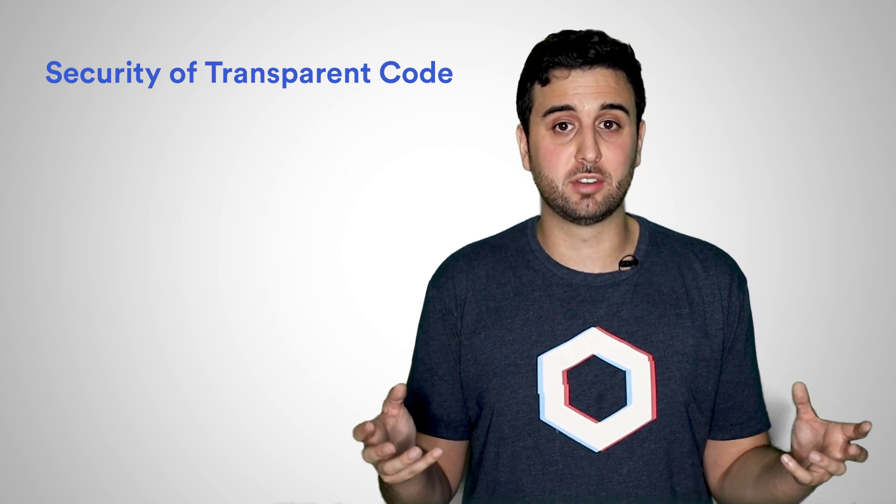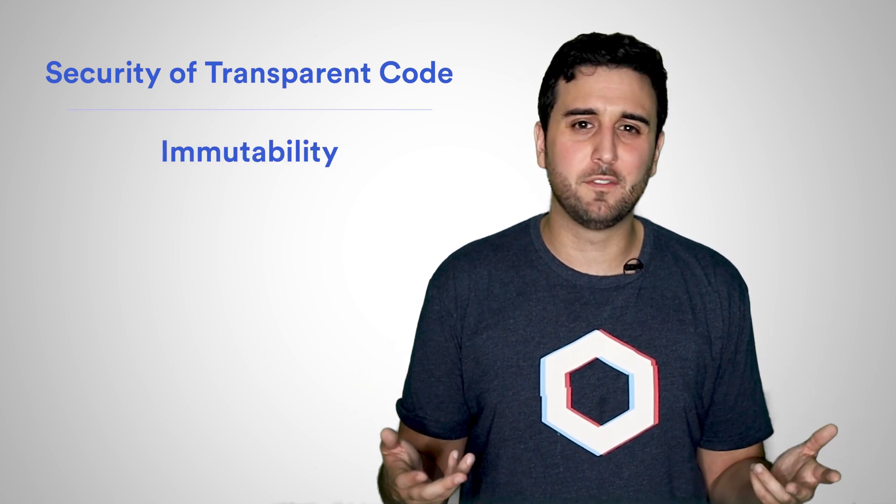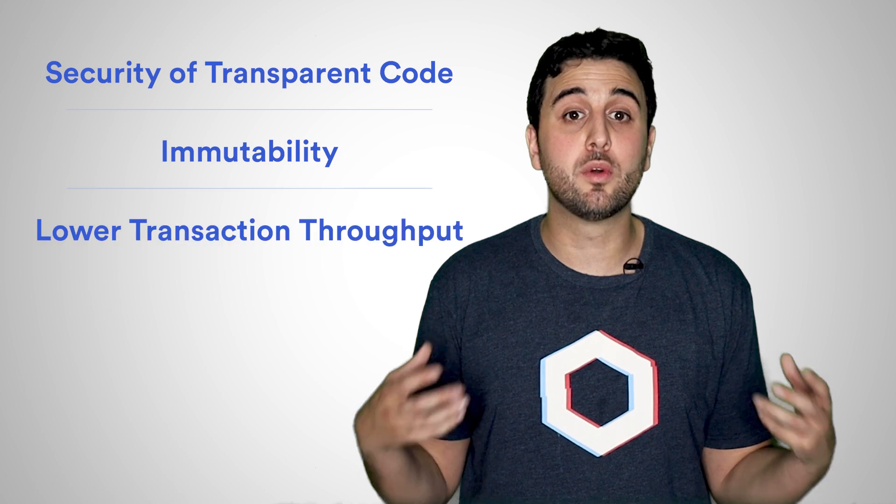Conversely, smart contracts also come with trade-offs that introduce new considerations for developers such as security concerns around transparent code, the immutability of deployed smart contracts, and lower throughput of transactions. These issues arise from the decentralized nature of blockchains and solutions to mitigate each issue are still an active area of development.